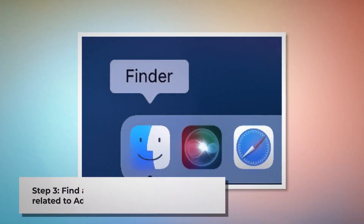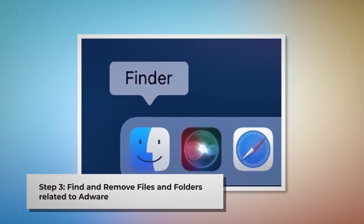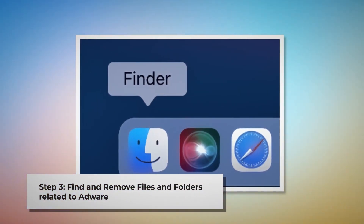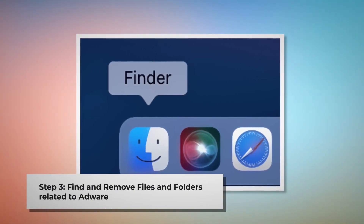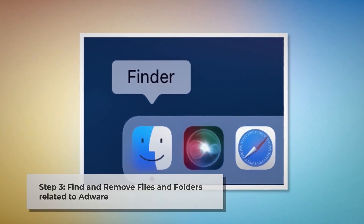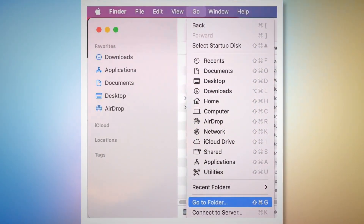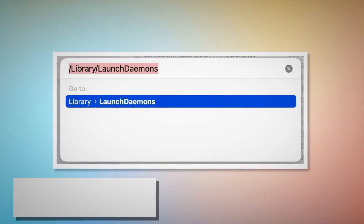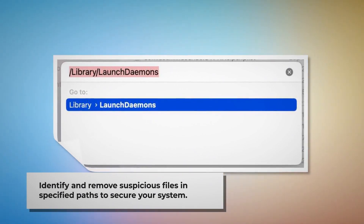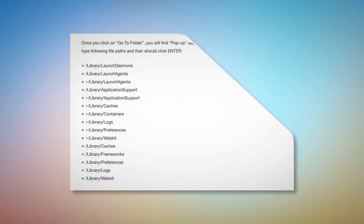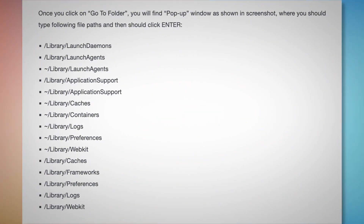Step 3: Find and Remove Files and Folders related to adware. Firstly, make sure you are in the Finder folder. If not, follow the steps mentioned in Step 2. Once you are in the Finder folder, click on Go at the top menu bar of your Mac, and then click Go to Folder on the drop-down menu, as shown in the screenshot. Once you click on Go to Folder, you will find a pop-up window where you should type these file paths and then click Enter.